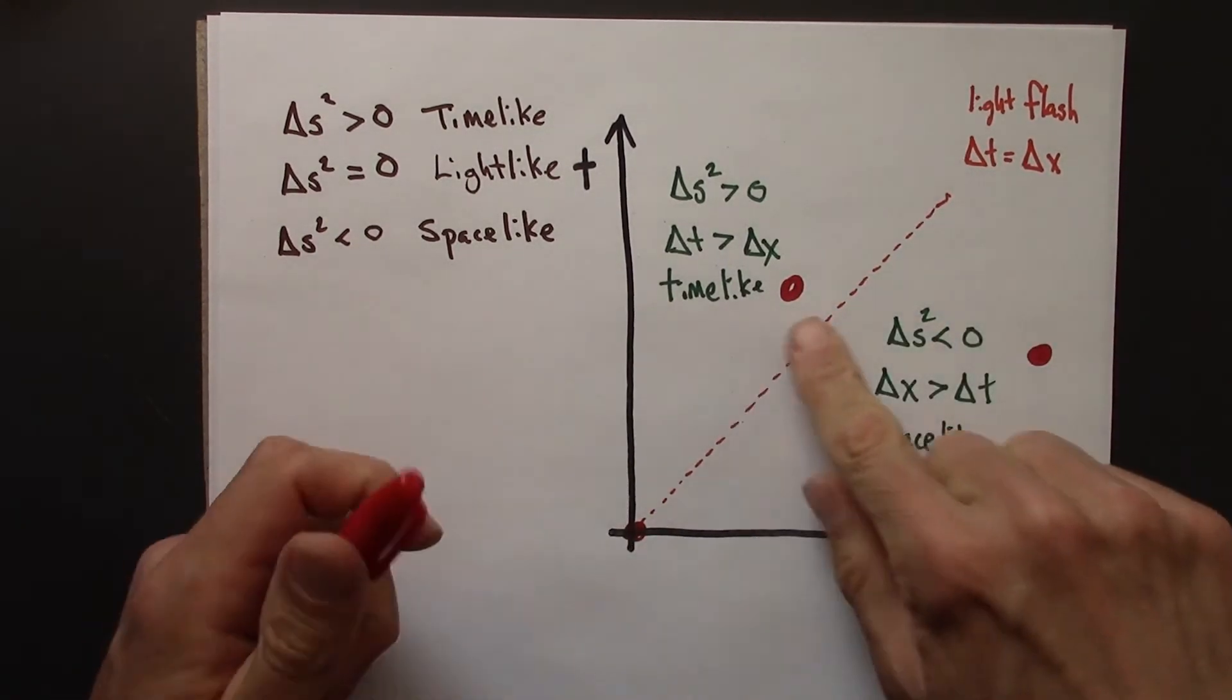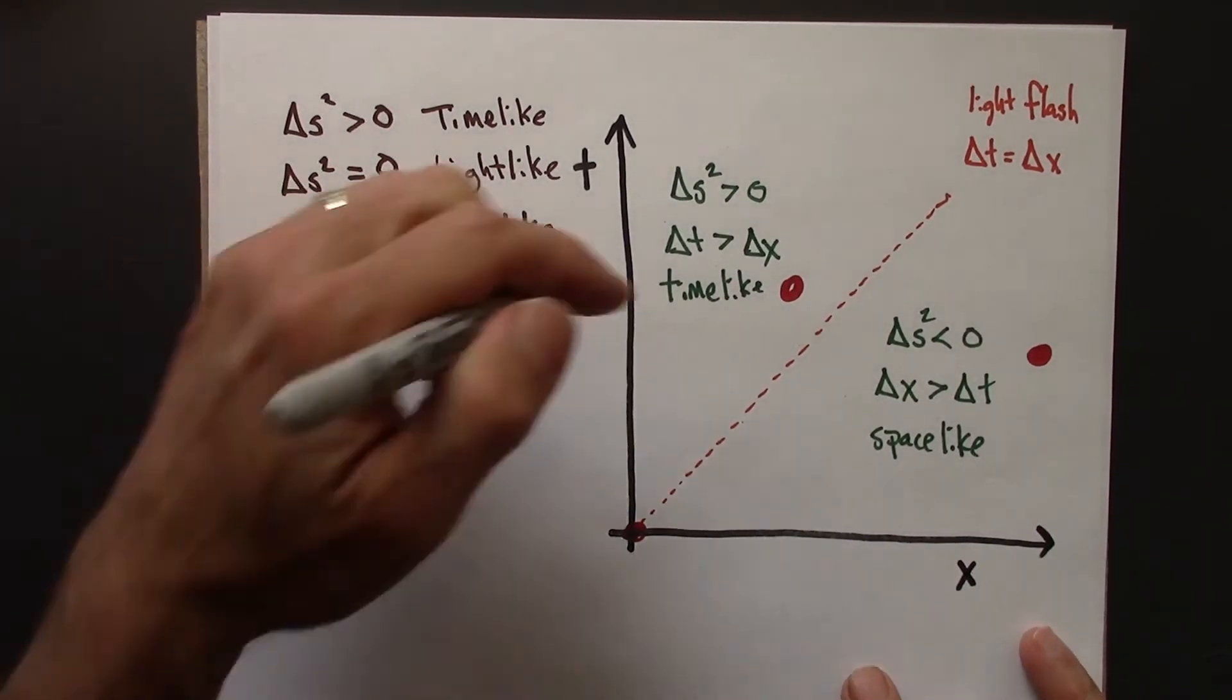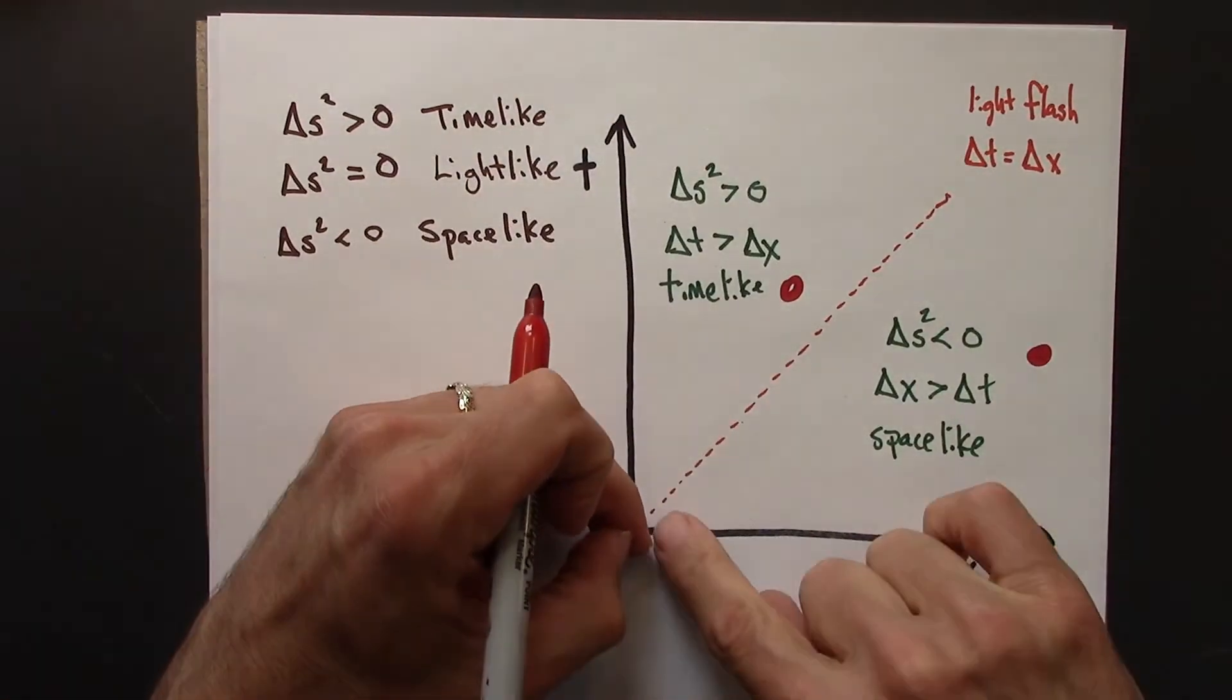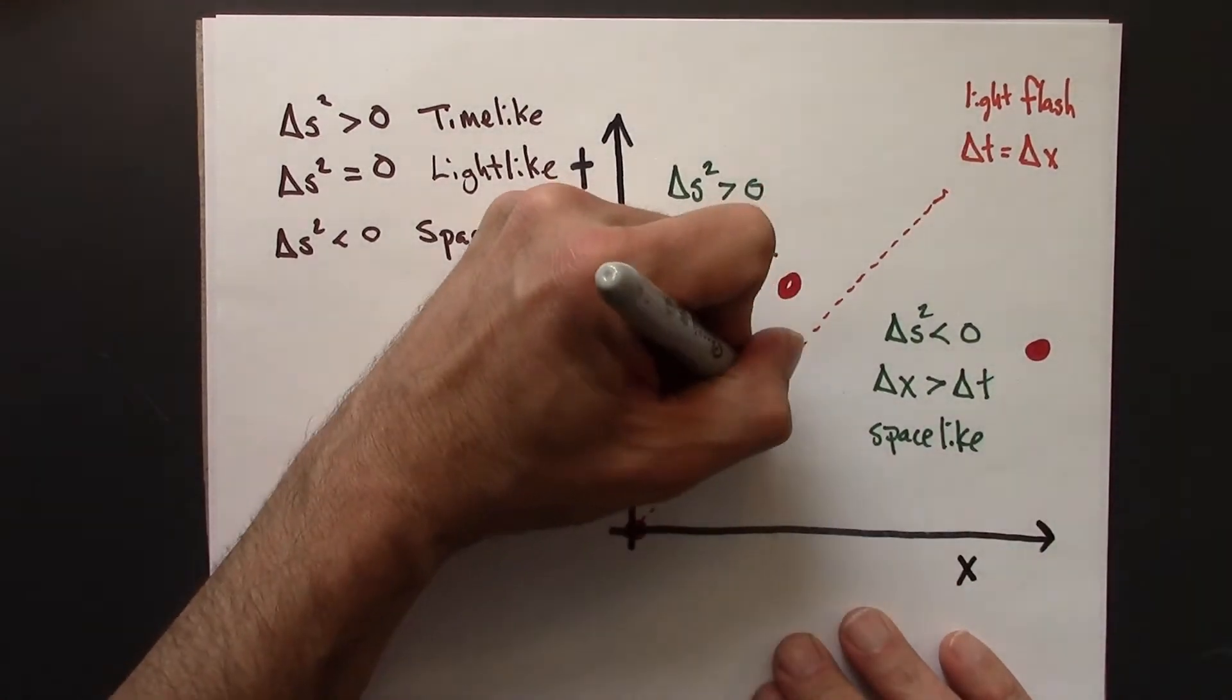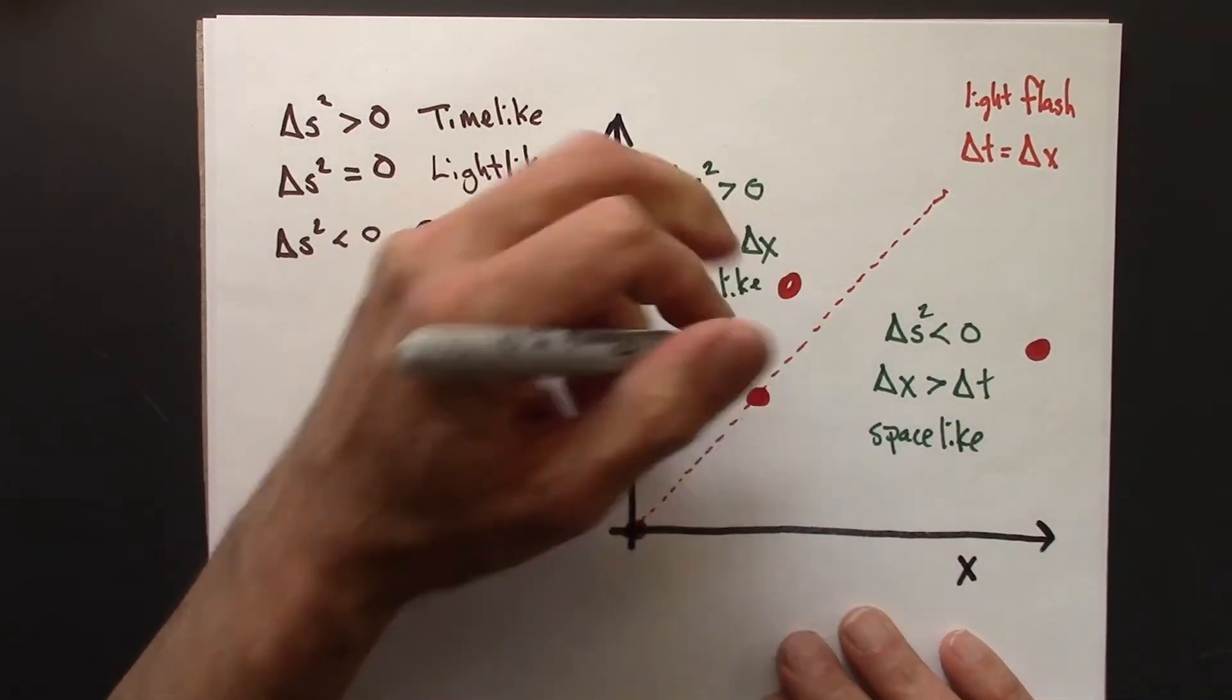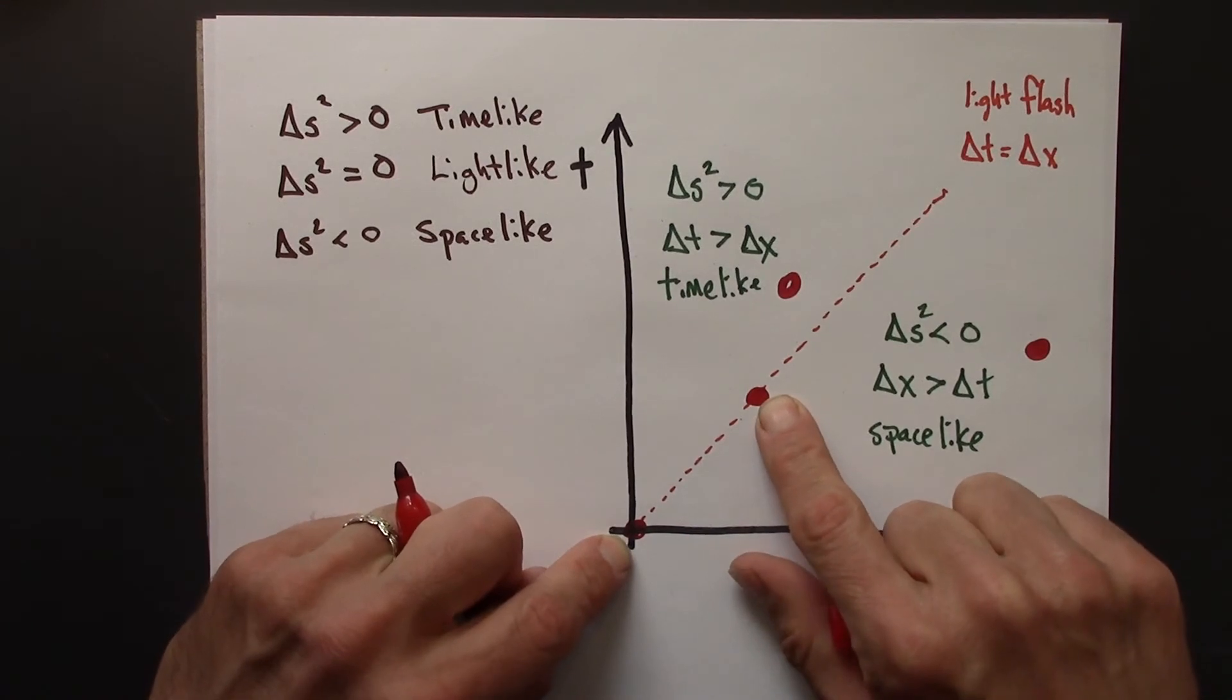Alright, so this is summarizing what we've seen so far. The delta S squared equals zero. That would be any point along here. So the space-time interval between these two points would be light-like.